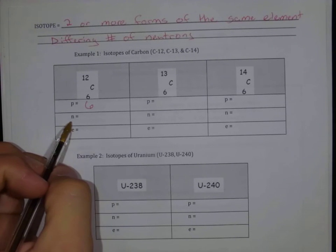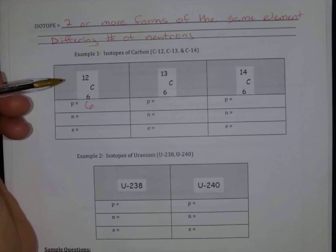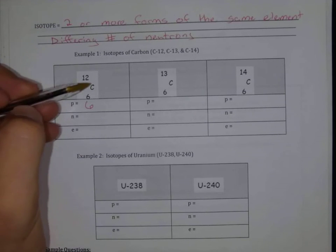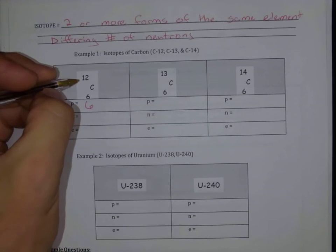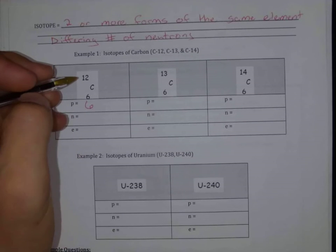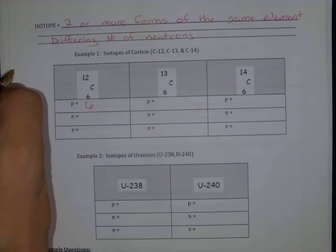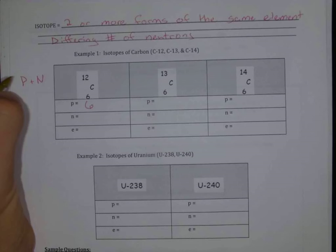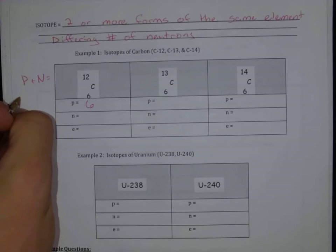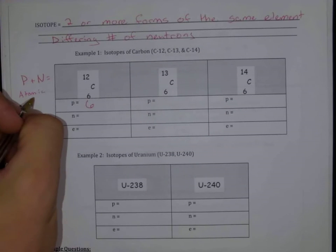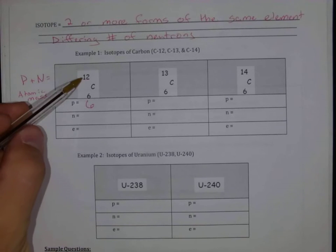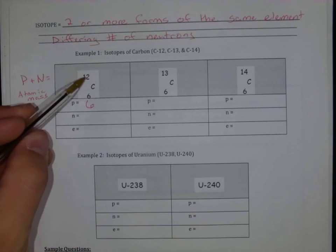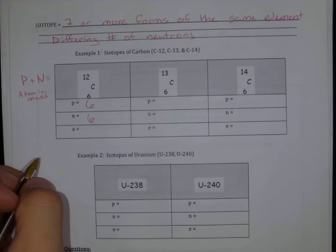But our number of neutrons determines the atomic mass. So our atomic mass for this carbon isotope is 12. So overall, our atomic mass has to be equal to the number of protons plus the number of neutrons. This is going to be equal to the atomic mass. Okay, so we have 12 as our overall mass. 12 minus 6 means that I have six neutrons in here.